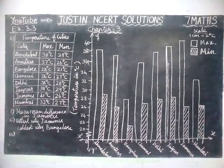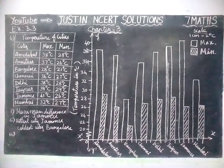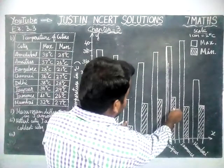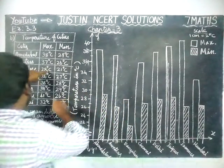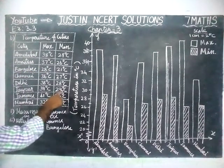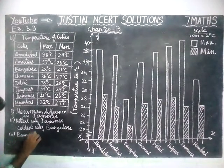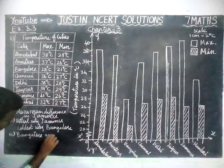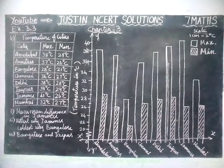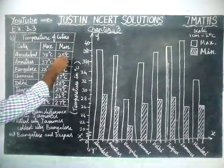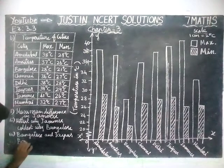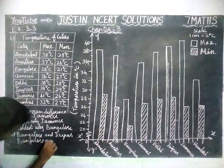Third question: name two cities where the maximum temperature of one was less than the minimum temperature of the other. First pair: Bangalore and Jaipur — Bangalore's maximum is 28°C and Jaipur's minimum is 29°C. Second pair: Bangalore and Ahmedabad — Bangalore's maximum is 28°C and Ahmedabad's minimum is 29°C.